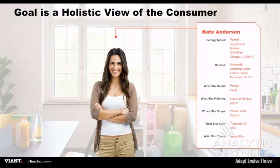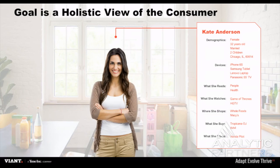The goal is a holistic view of the customer. Here's Kate again — we have her demographic information, her device graph and profile, we know what she reads (she subscribes to People magazine and Health), what she watches, where she shops, what she buys, and what she drives. This gets beyond the proxy or the cookie or the model and into a much deeper and richer look at the customer, which will help drive the ability to do attribution.